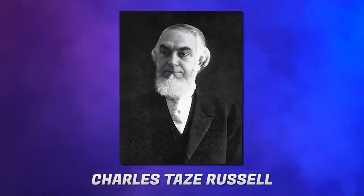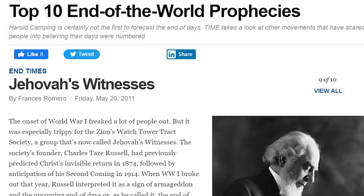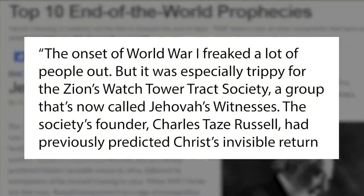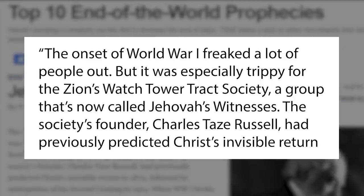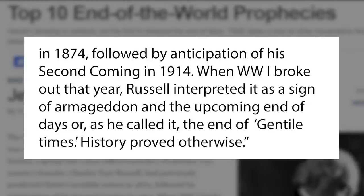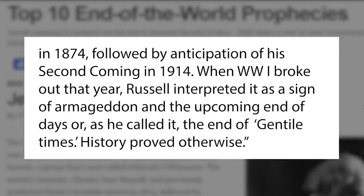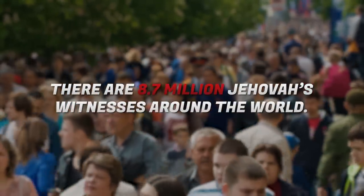Several major modern religious founders fall into this category. One of them is Charles Taze Russell, founder of the Jehovah's Witnesses. Russell had previously predicted Christ's invisible return in 1874, followed by anticipation of his second coming in 1914. When World War I broke out that year, Russell interpreted it as a sign of Armageddon and the upcoming end of days, or as he called it, the end of Gentile times. History proved otherwise. There are currently over 8.5 million Jehovah's Witnesses around the world. Jesus wasn't kidding when he said false prophets would rise and deceive many.